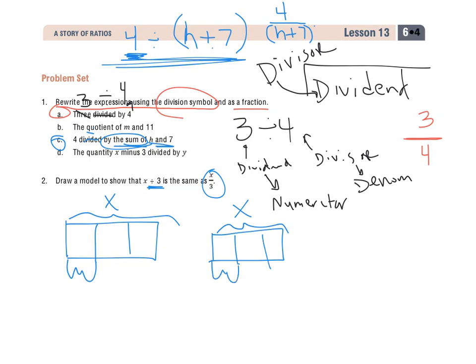So the models are showing the same, because x divided by 3 is the same as x over 3, or x thirds.